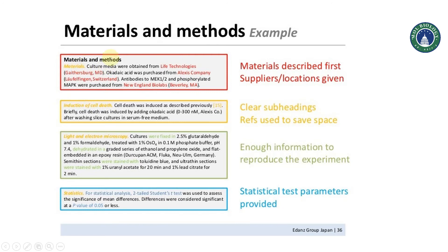If we specifically see the examples, in the material method section like here we can see materials - the culture media were obtained from Life Technologies. Here we have mentioned the name of the company like it was Gaithersburg, MD. And the okadaic acid was purchased from Alexis Company, Switzerland. Like every detail you have to mention, like these antibodies were phosphorylated MAPK were purchased from New England Biolabs. And even you can mention the complete detail and how the induction - cell death was confirmed.